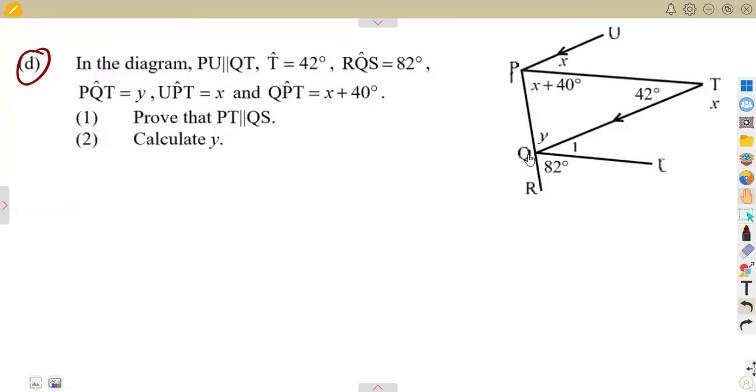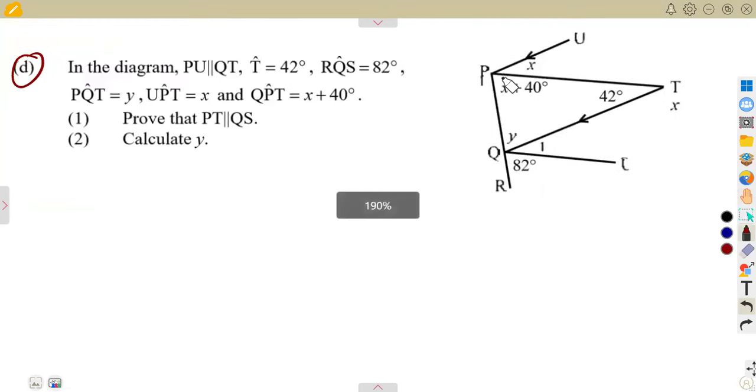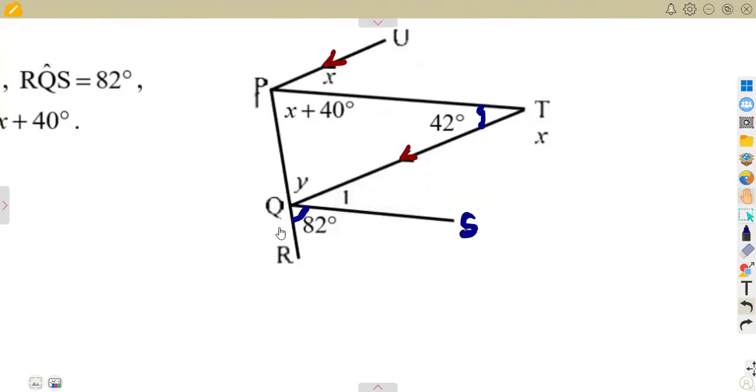I want us to consider this typical question that we are given here in the diagram. We are given that PU is parallel to QT, these two lines are parallel given the indication of the parallel lines that we have. Angle T being 42 degrees and also the 82 degrees from RQS. R to Q to S, so this is our S here. There is an angle of 82 degrees there, angle R to Q to S.